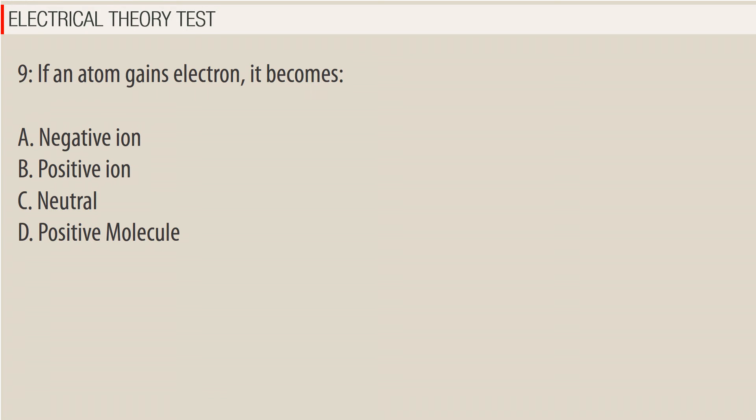Question 9: If an atom gains an electron, it becomes: A. Negative ion. B. Positive ion. C. Neutral. D. Positive molecule.